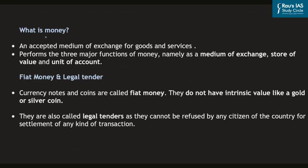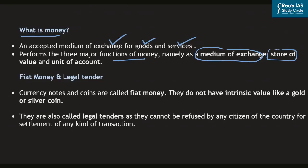Before understanding central bank digital currency, let us first understand what money itself is. Money is an accepted medium of exchange for goods and services. Money performs three major functions: it acts as a medium of exchange, it is a store of value, and it is a unit of accounting. We use cash and coins as a medium of exchange, and the cash you hold represents the value of money you hold.